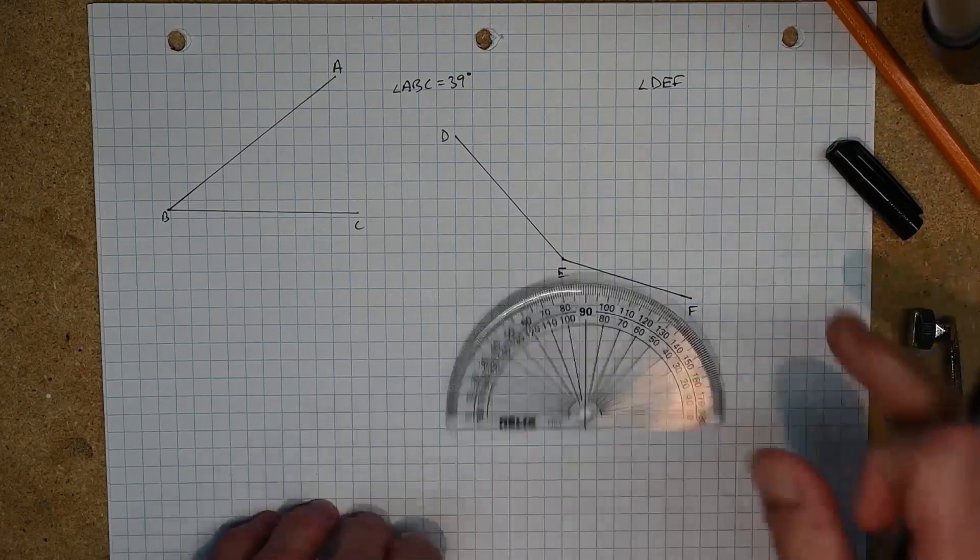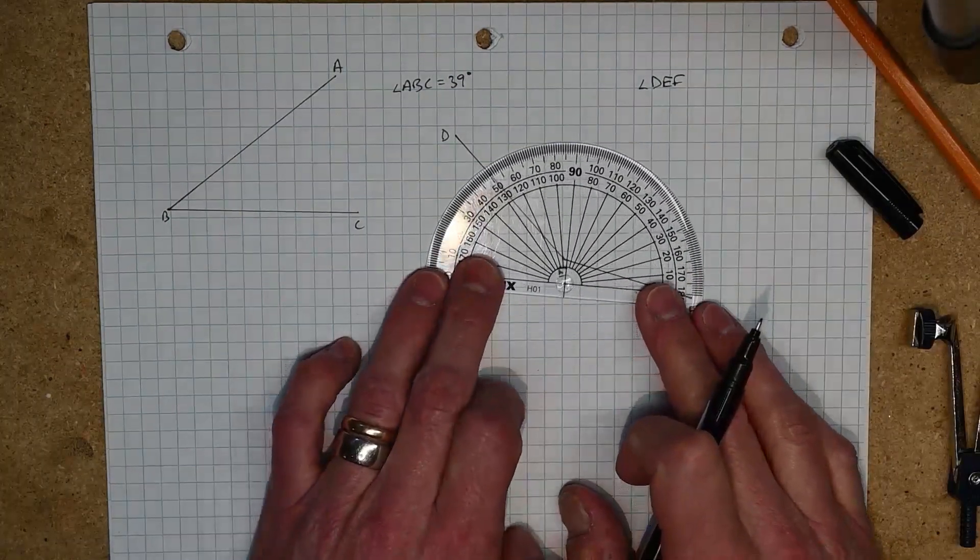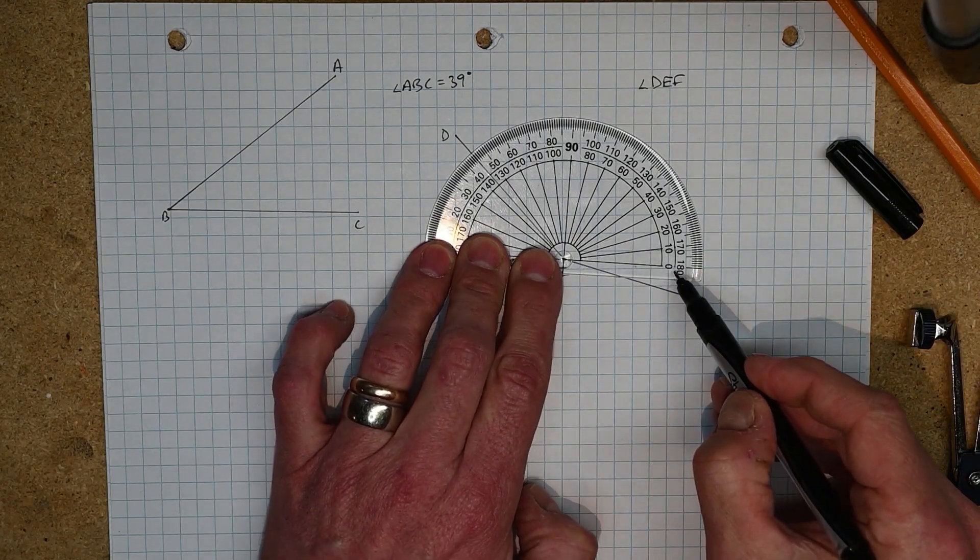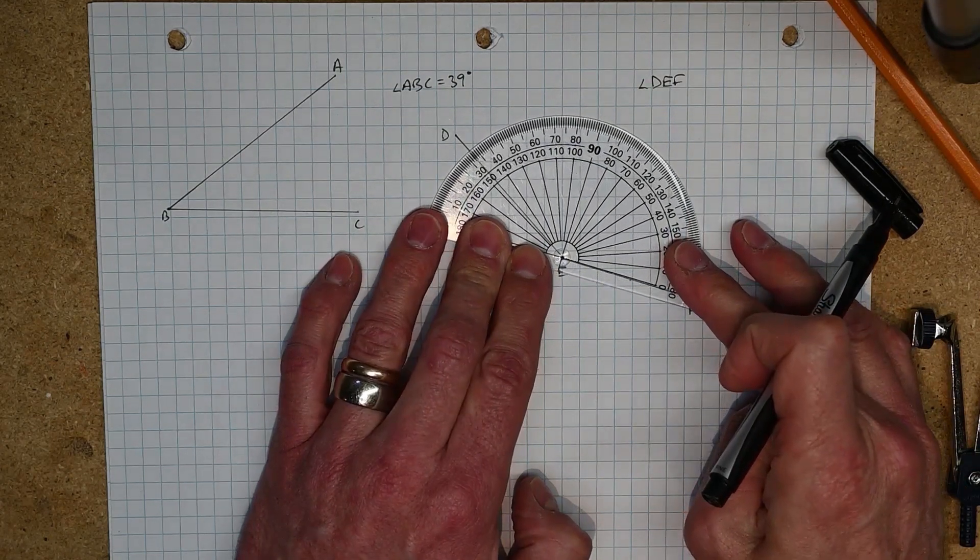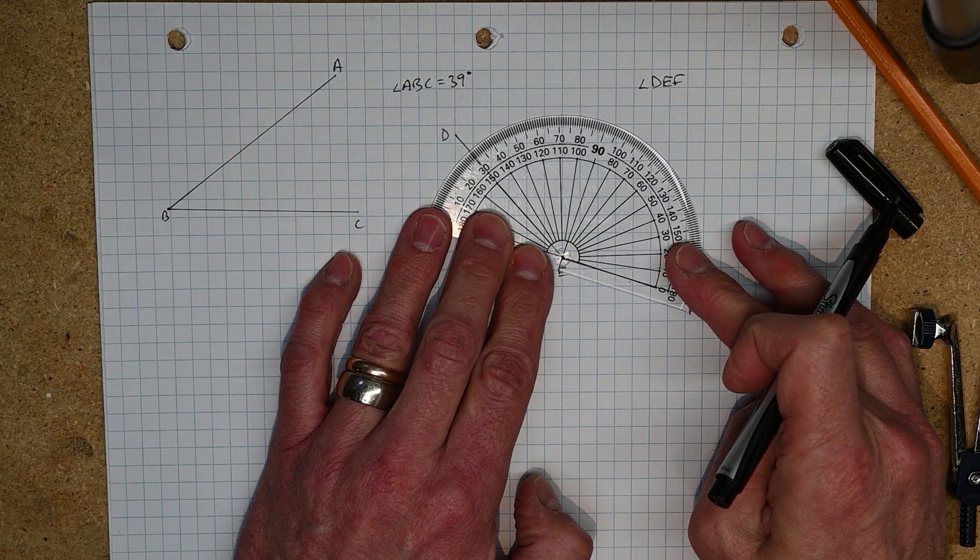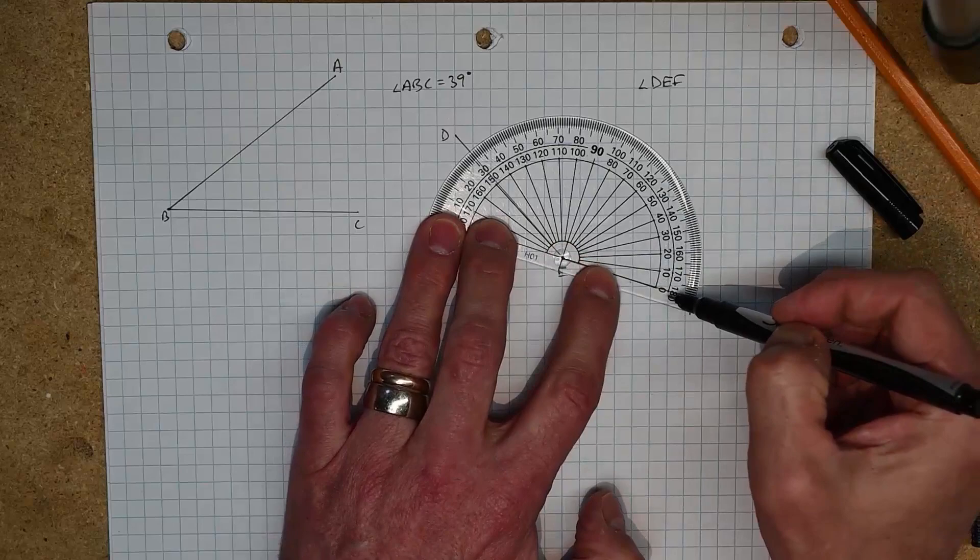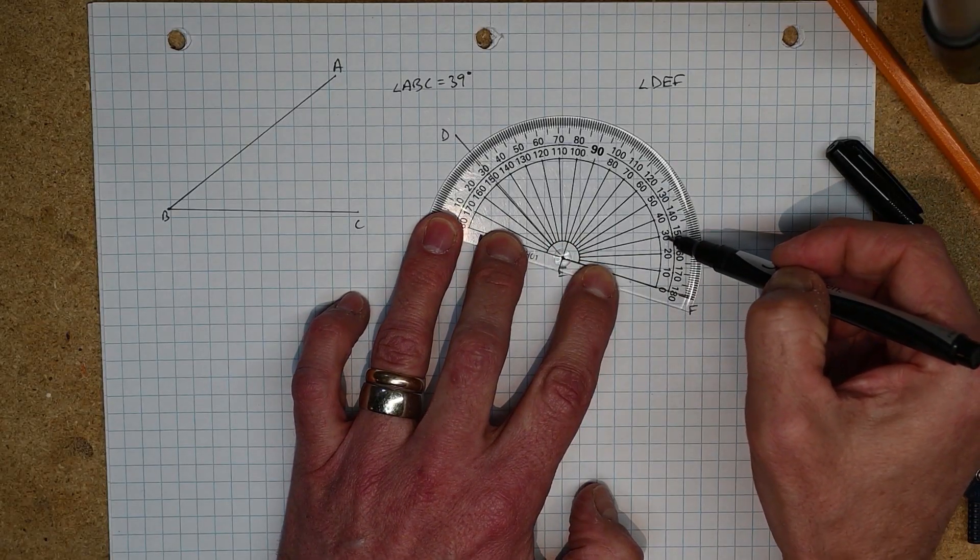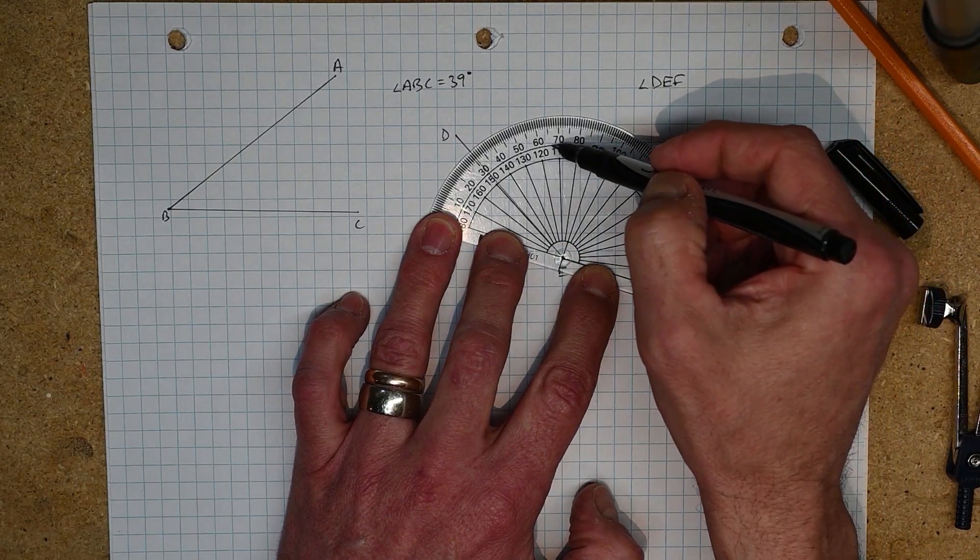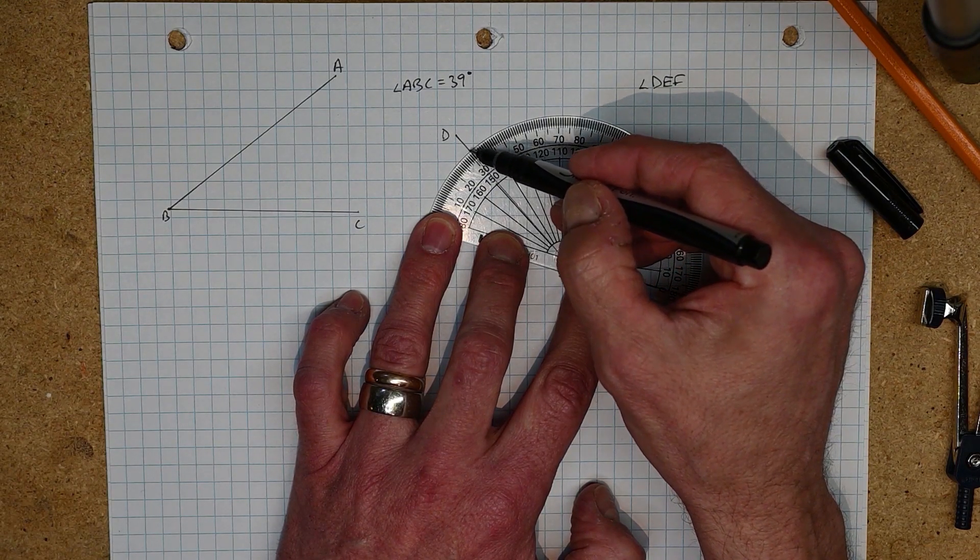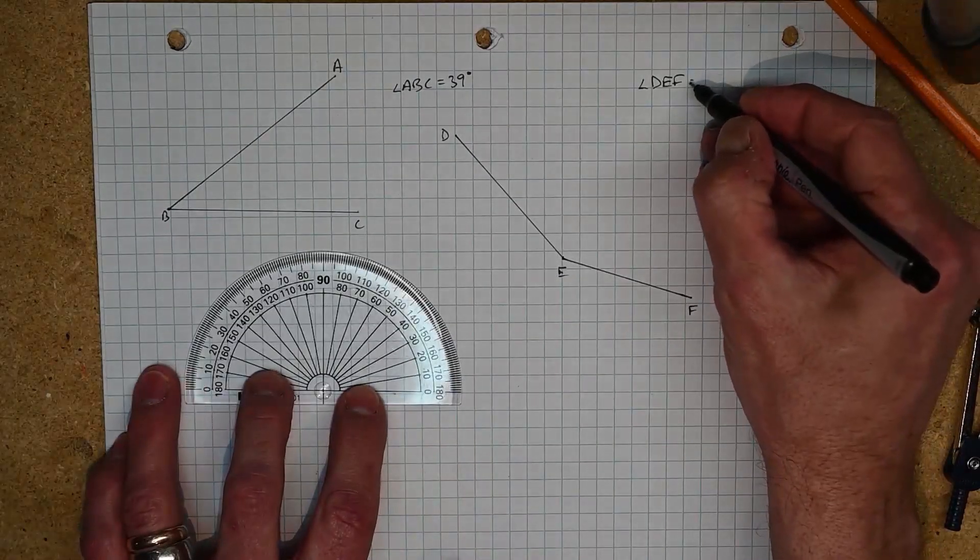So I get my protractor and again that little crosshairs needs to go right on the vertex of the angle, and the arm labeled zero has to line up with one arm of my angle. And there it is. Now I just move up from that zero: 10, 20, 30, 40, 50, past 90, all the way up past 140, and I'm just prior to 150 there, so I have an angle of 149 degrees.